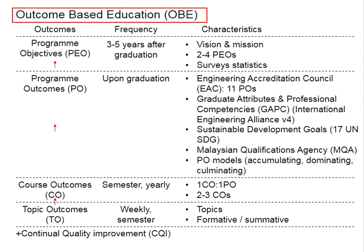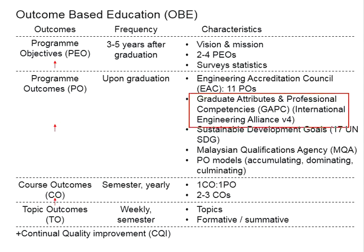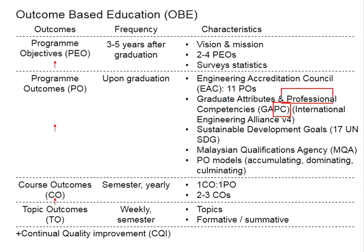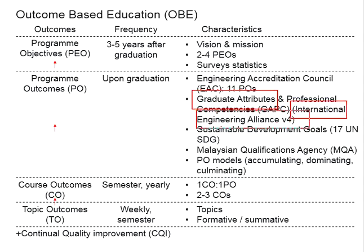In our discussions of outcome-based education, specifically for engineering programs, we have been mentioning the GA, PC, and IEA. GA stands for Graduate Attributes, PC stands for Professional Competency, and IEA is the International Engineering Alliance. We mentioned designing a program that meets the graduate attributes as outlined by IEA.